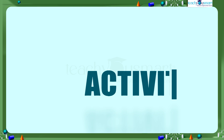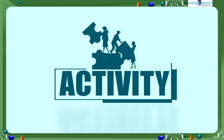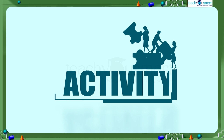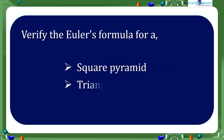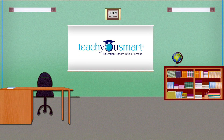Before winding up, let's check how much you understood by doing an activity. Verify Euler's formula for a square pyramid and a triangular prism. Hope you all understood the chapter well. See you all in the next class with another interesting topic.